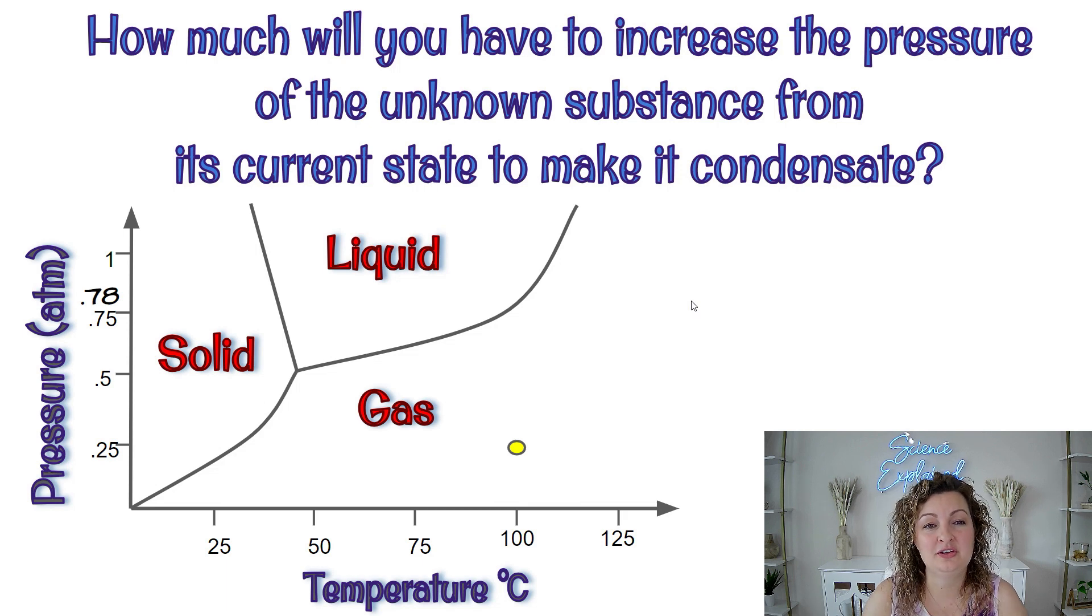How much will you have to increase the pressure of the unknown substance from its current state to make it condensate? So here is our current state right here. And it says we're going to increase the pressure to get it to condensate. In other words, we need to keep it the same temperature this time. So our starting temperature is 100 degrees Celsius. We're going to keep it there, but in order to condensate a gas, we need to go to the liquid. So it's going to have to hit this line and we need to keep it at 100 degrees. So we're just going to go straight up, which is going to be right here.